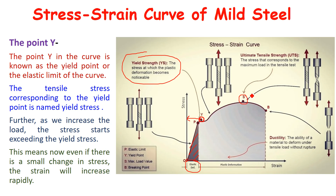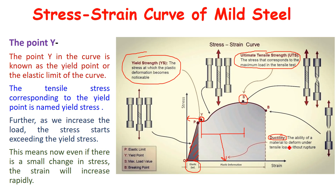Point S is called the ultimate load point or ultimate tensile strength of the material — here the material takes the maximum load. The zone between Y point and S point is called plastic deformation, meaning the material undergoes permanent deformation and will not regain its original dimensions even if the load is released. In this zone you will also understand ductility: the ability of a material to deform under tensile load without rupture. Point B is the breaking point — at this point the material will fail.